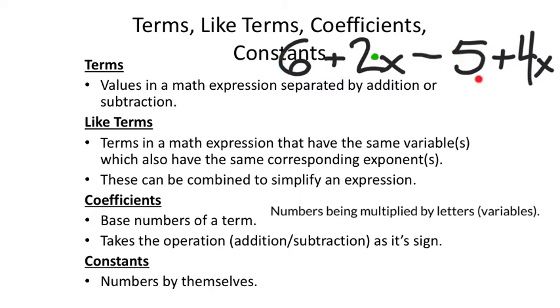Constants are just numbers by themselves. The 6 is considered a constant, and the negative 5 — which is not being multiplied by a letter — is also considered a constant.